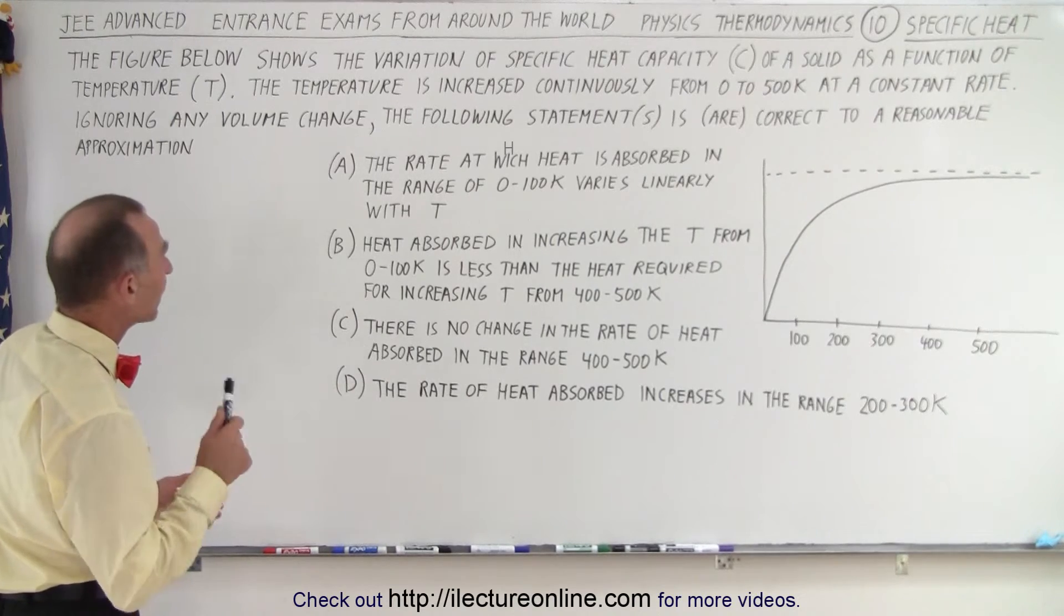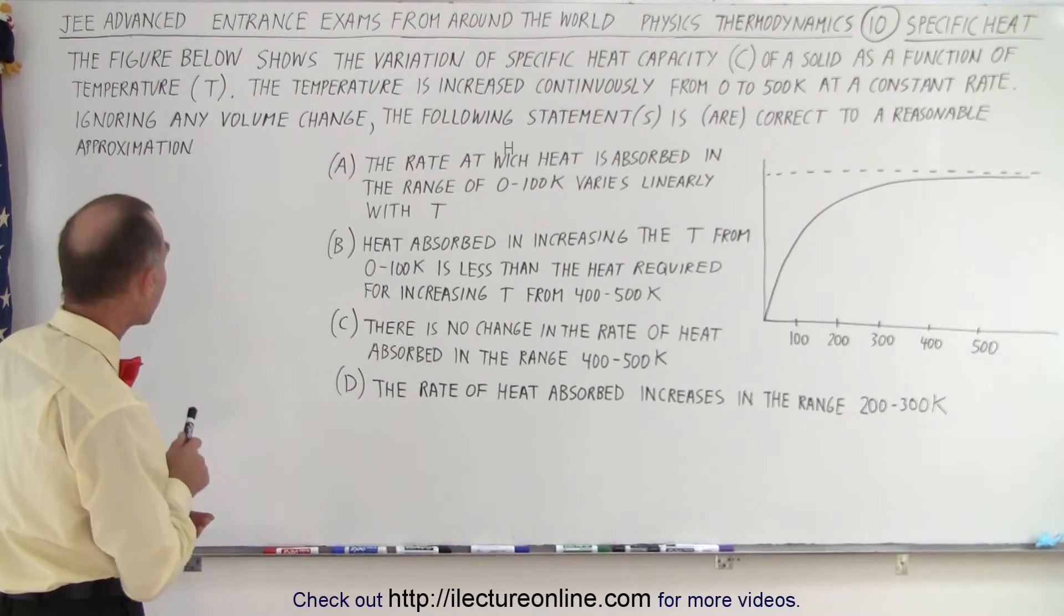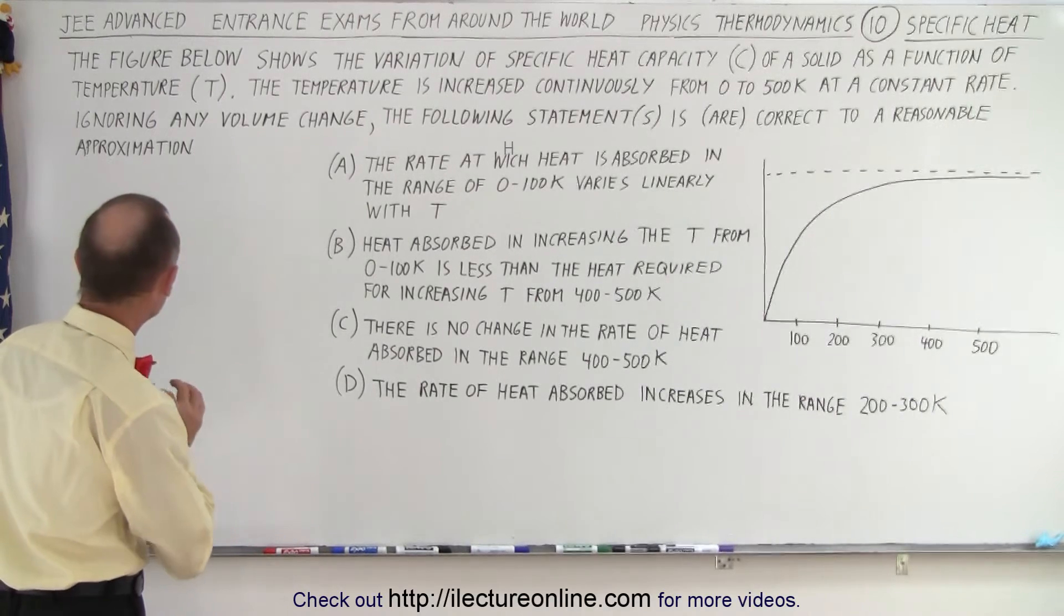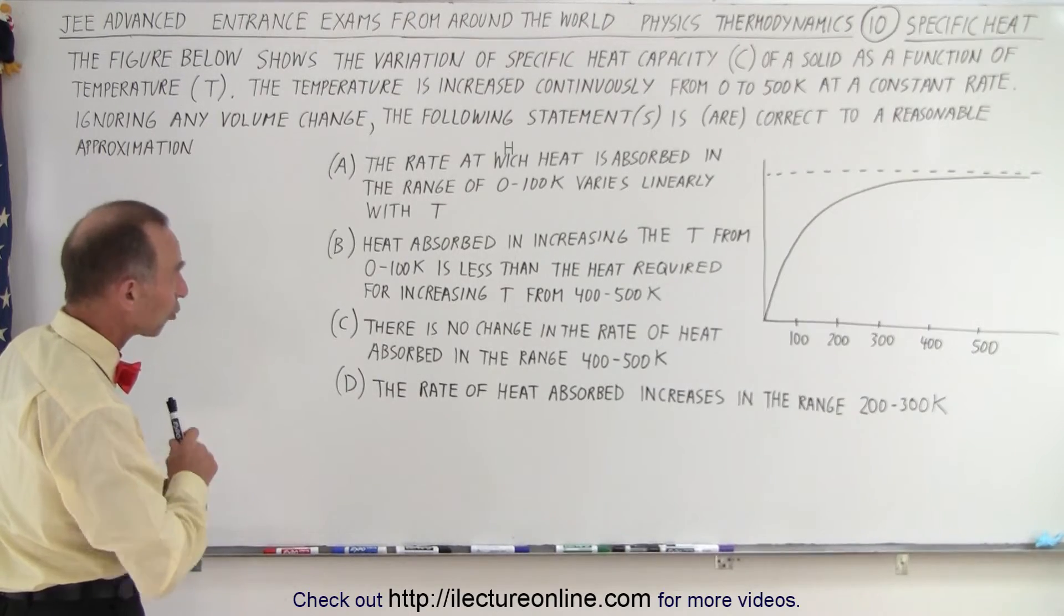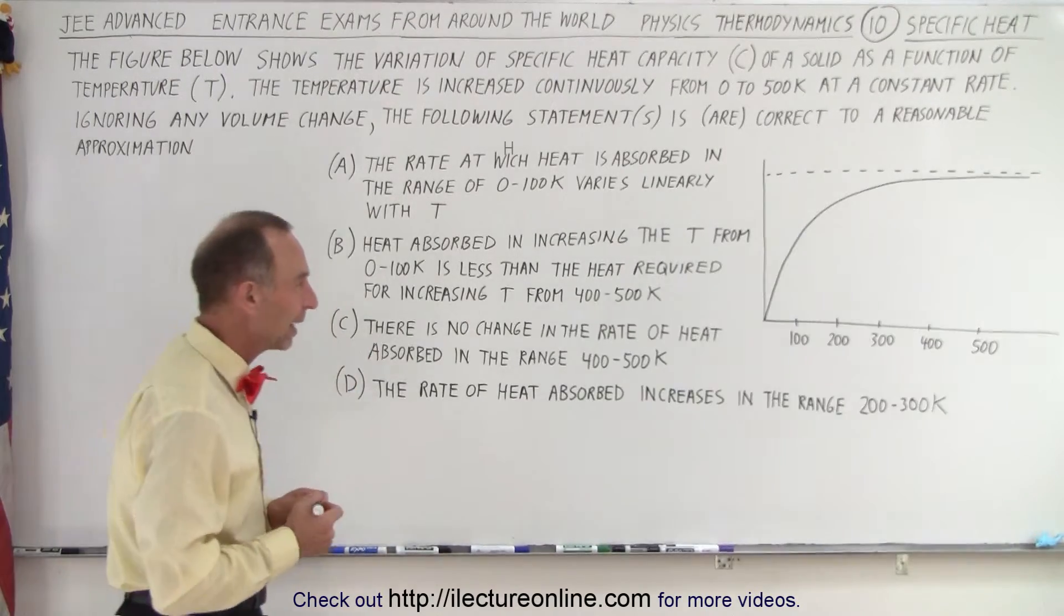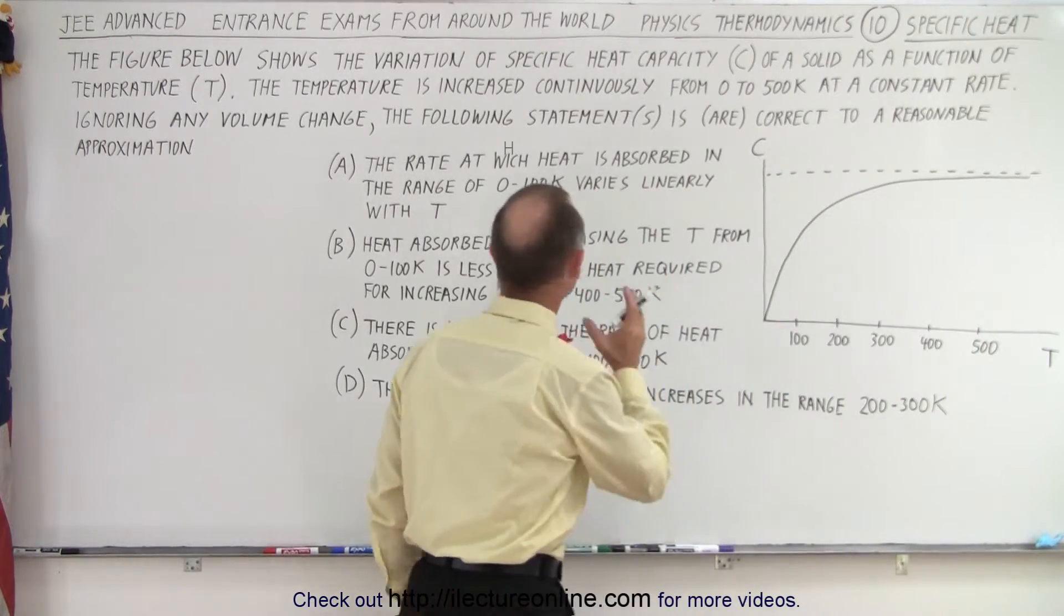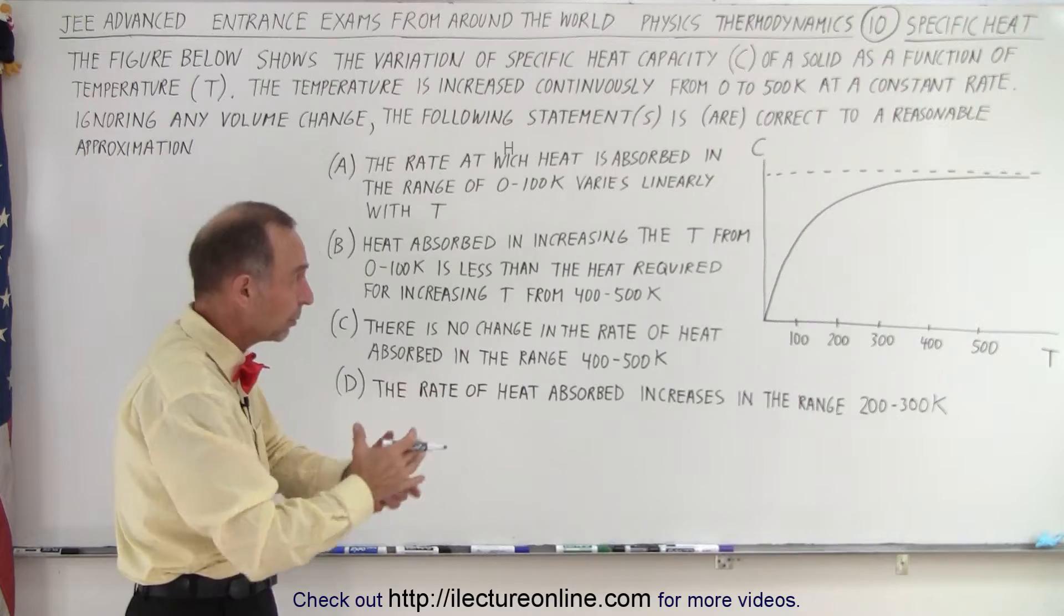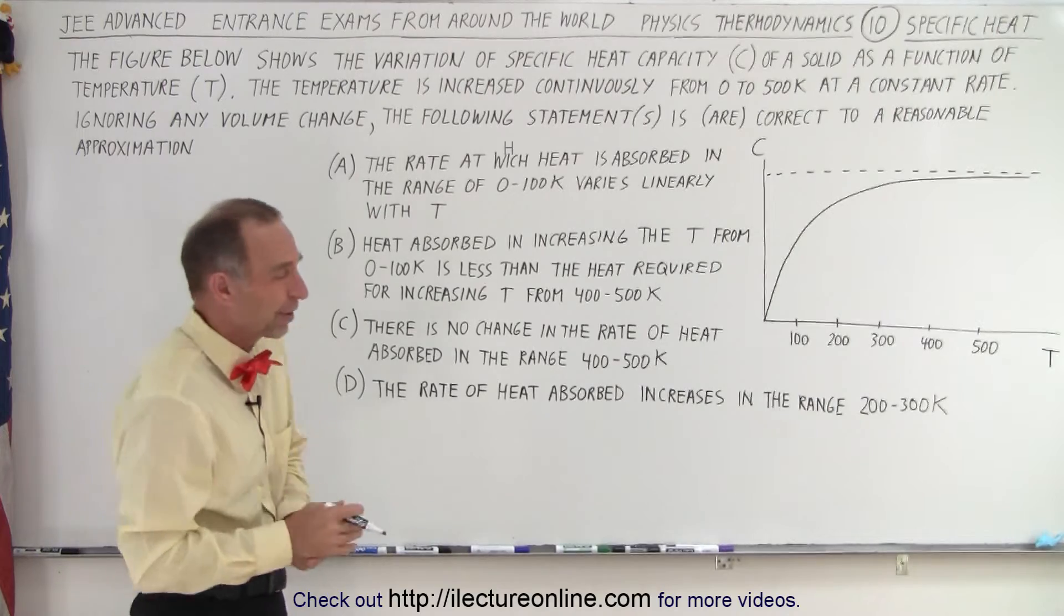The figure below shows the variation of specific heat capacity, C, of a solid as a function of temperature T. The temperature is increased continuously from 0 to 500 K at a constant rate. Ignoring any volume change, the following statement or statements is or are correct to a reasonable approximation. So they give us this graph and notice on the horizontal axis we have T and the vertical axis we have what we call the specific heat capacity, which essentially is the specific heat times the mass or the volume of the object, which means that for that specific object, it's essentially the same as the specific heat.